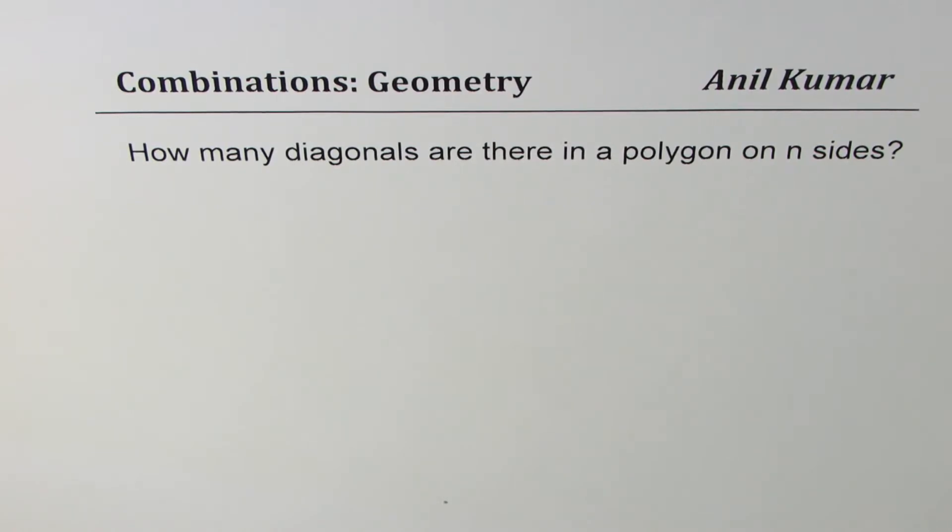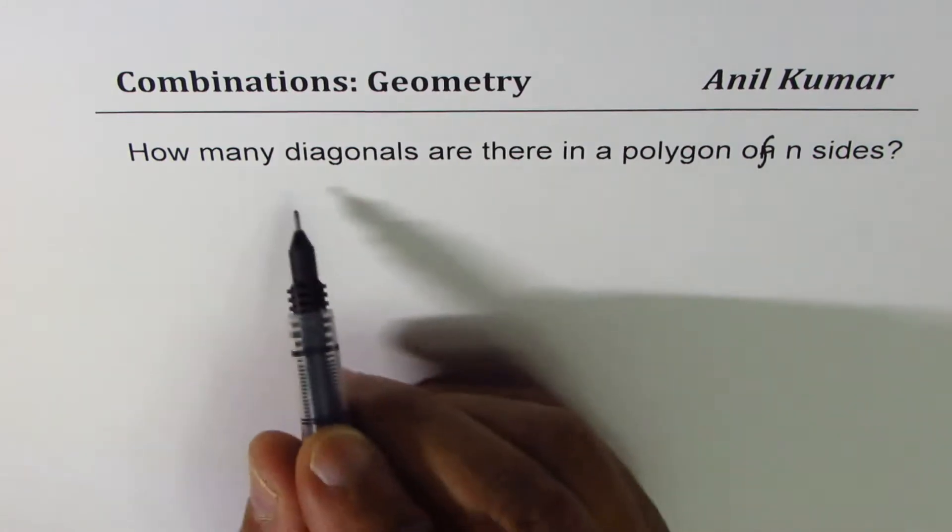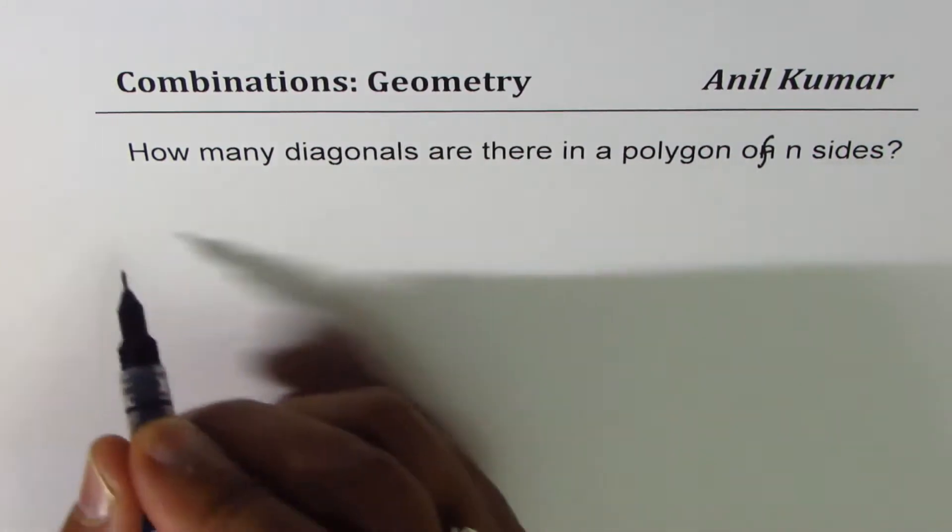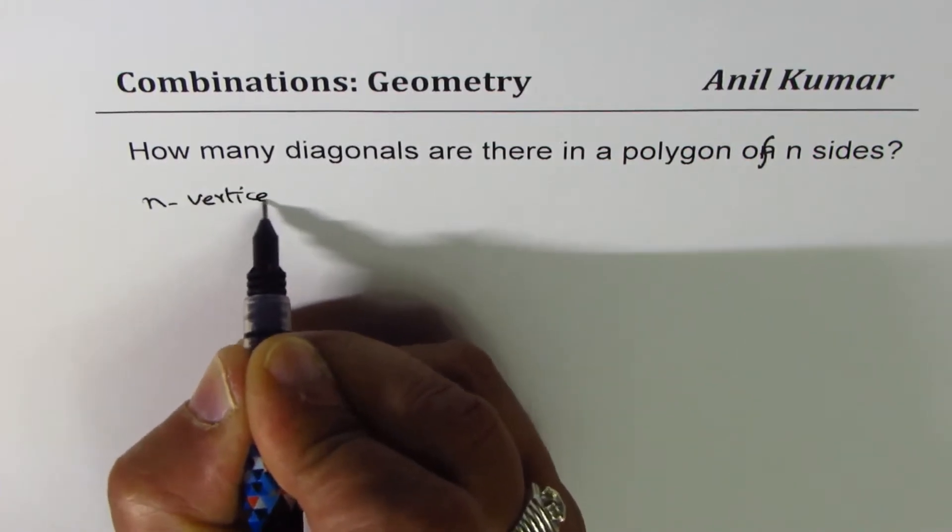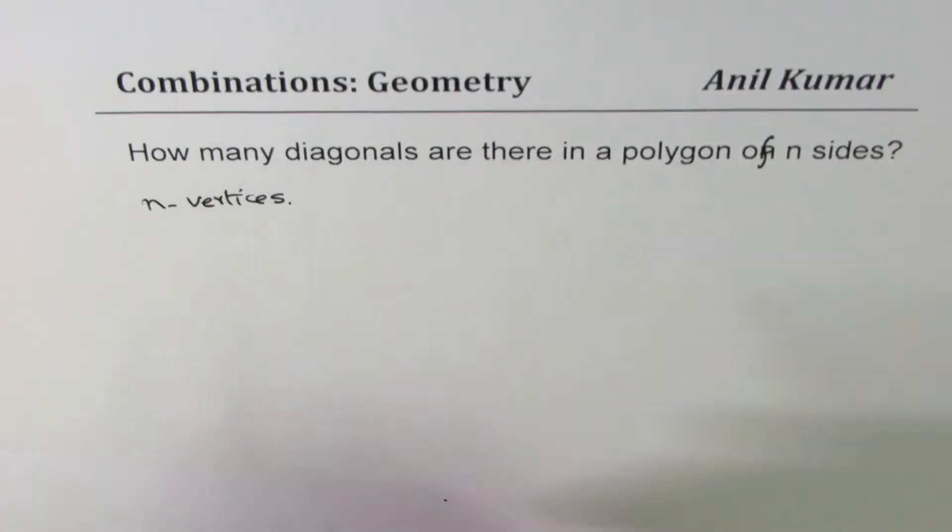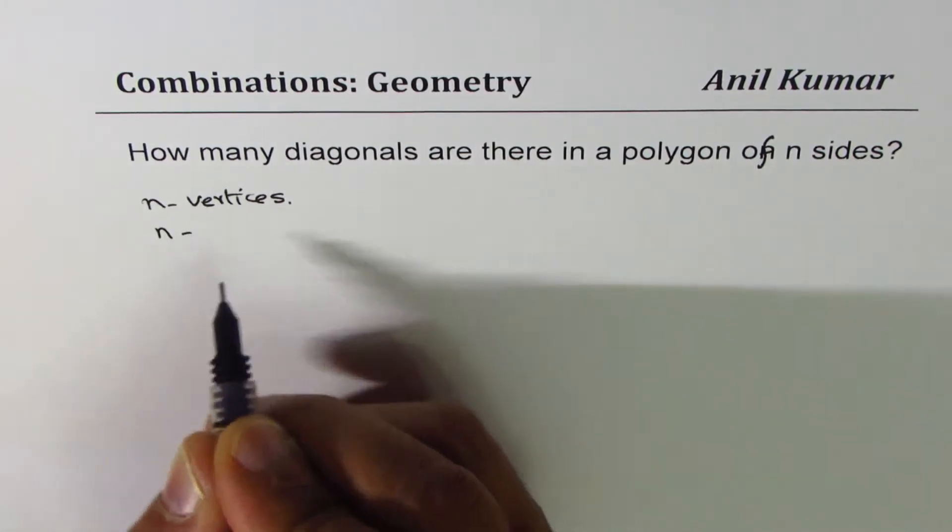The question here is, how many diagonals are there in a polygon of n sides? So if a polygon has n sides, that means there are n vertices. So how many diagonals are there?